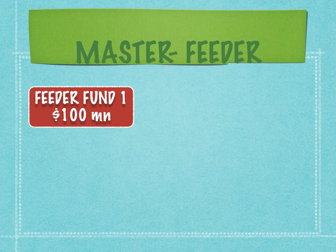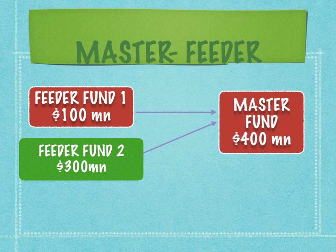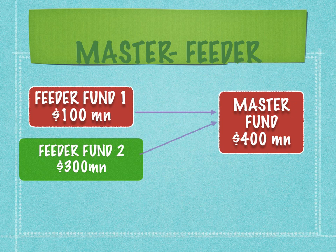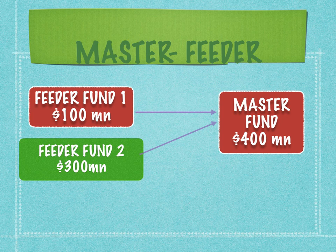For example, if feeder fund one has contributed 100 million dollars into the master fund and feeder fund two has contributed 300 million dollars — and these are the only two feeder funds — the master fund's total pool is 400 million dollars to invest. At the end of the year, whatever profits are generated are distributed in the same proportion as their contribution: one-fourth and three-fourths. So 25% of the profits go to feeder fund one and 75% go to feeder fund two.